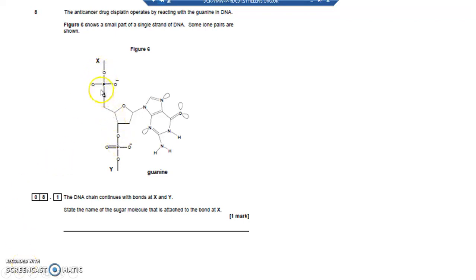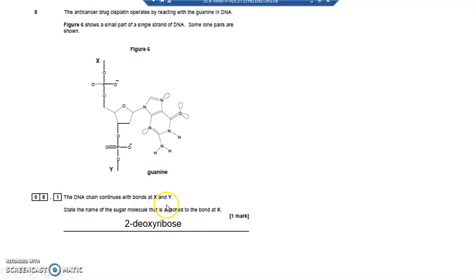We've got a strand of DNA and we've got two phosphate groups. What bonds the phosphate groups? The answer is two deoxyribose - that's the sugar that bonds the phosphate groups. That's just something to learn; biologists probably already know that.